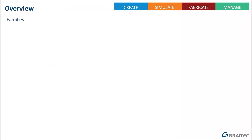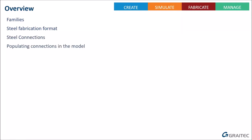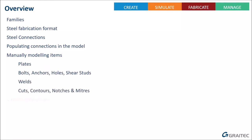Today we're looking at steel modeling inside Revit - tips and tricks. We'll start with families, then look at the steel fabrication format created when you apply connections inside Revit. We'll then look at applying connections, manually modeling items including plates, bolts, anchors, holes, shear studs, welds, cuts, contours, notches and mitres, then creating custom connections, and finally customizing and adding extra data.